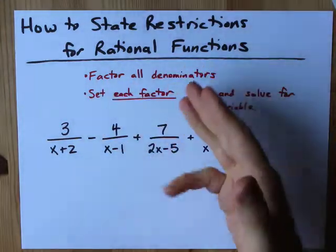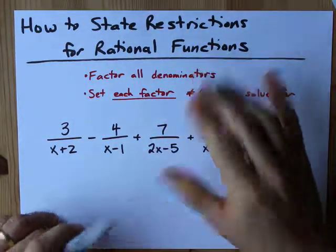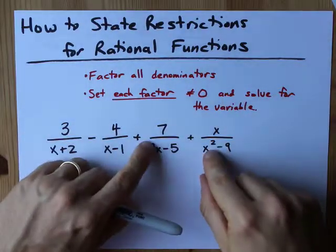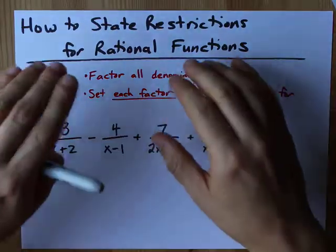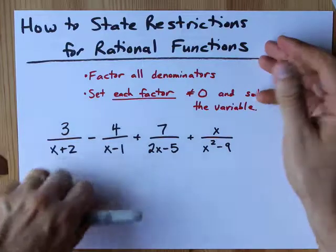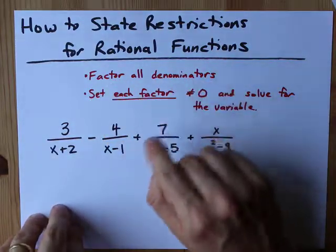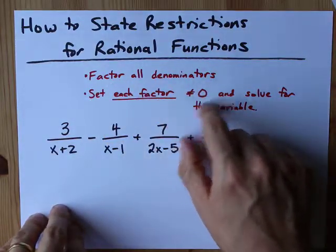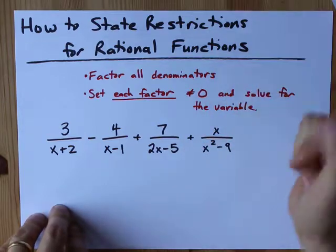How do you state the restrictions on rational functions? Rational functions can be identified because there are x's on bottom. The answer to how do you state the restrictions is factor all of the denominators and then you set each factor not equal to zero and then isolate for that variable.